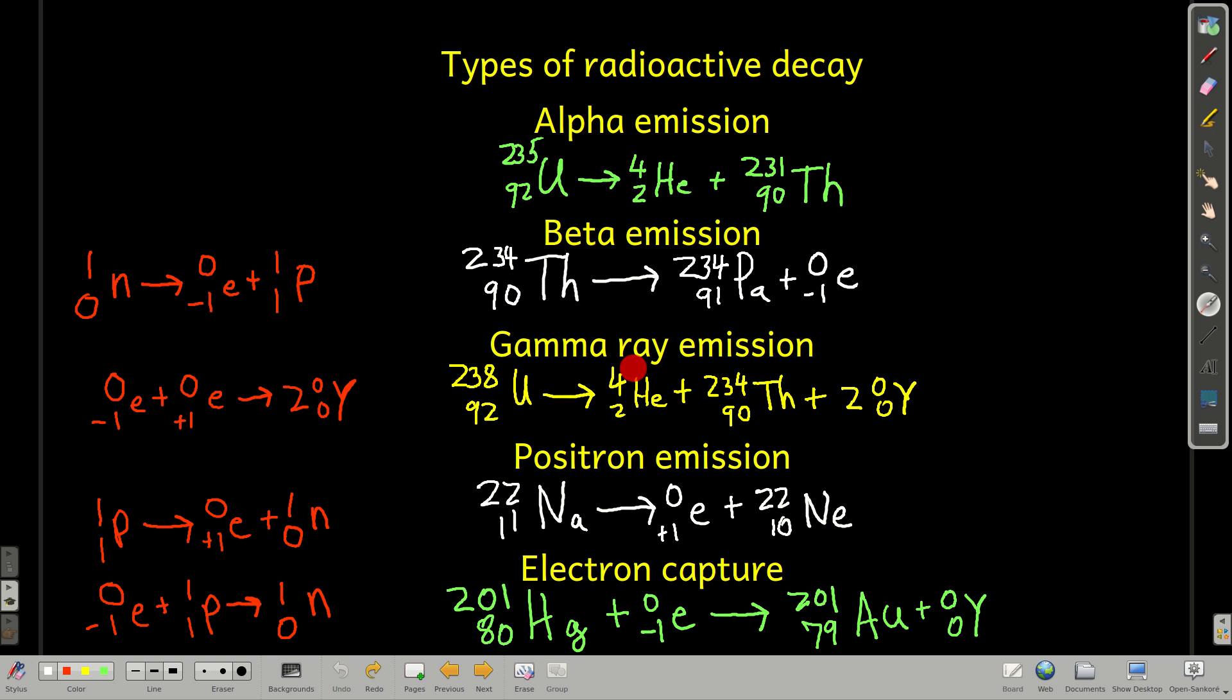Gamma emission, gamma ray emission, like this right here, a gamma ray is given off. Positron emission, releasing a positron. An electron capture. So now here, what happens here is that an electron that's close to the nucleus is captured by the nucleus, or a 1s electron most likely. So it's on the left-hand side of the arrow here.